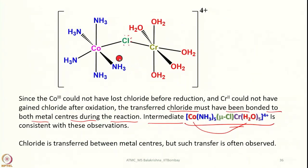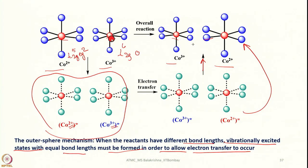For redox reactions, we have two types: inner sphere and outer sphere mechanisms. In inner sphere coordination, a bridging ligand is required, forming an intermediate, and once electron transfer is complete the bridging ligand moves toward the metal being oxidized. In the outer sphere mechanism, the Franck-Condon principle must be kept in mind — both the high-spin and low-spin complex must have an optimum bond length and bond angle at the intermediate stage before electron transfer, after which they revert to their respective spin states.